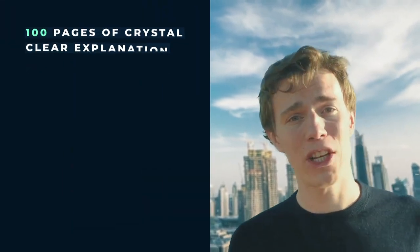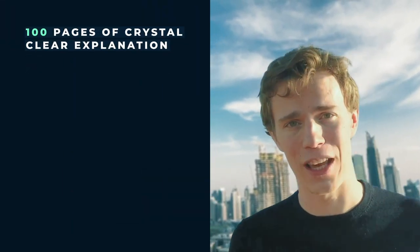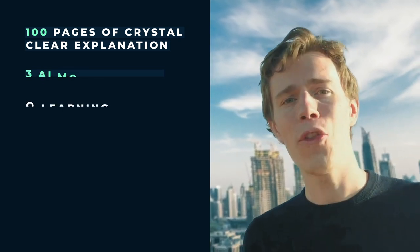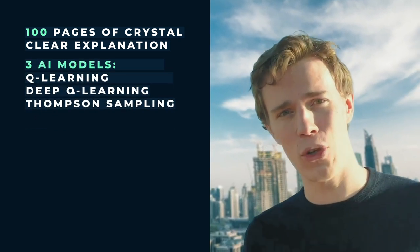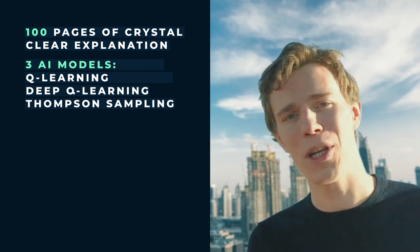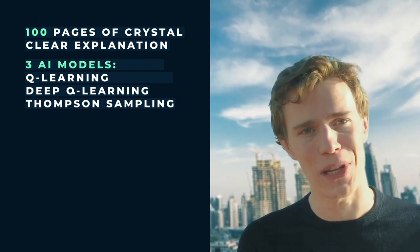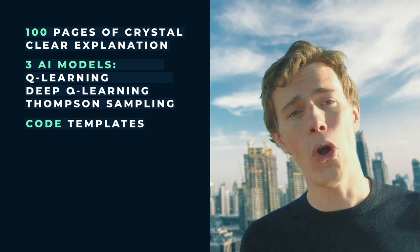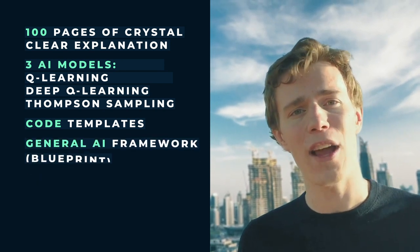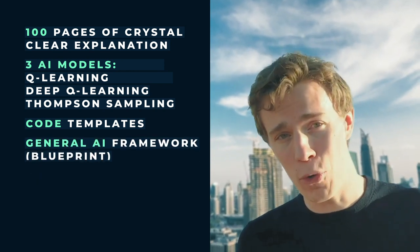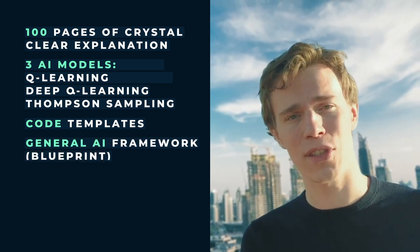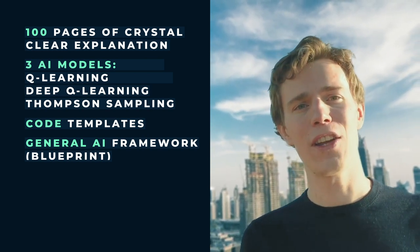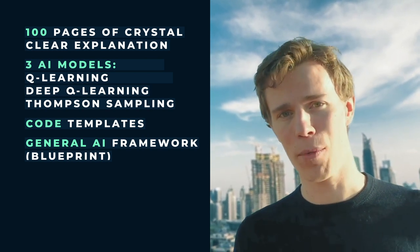This book includes 100 pages of crystal clear explanation written in beautiful and clean LaTeX. It covers all the AI models of the course, including Q-Learning, Deep Q-Learning, and the unbeatable Thompson Sampling, as well as all the code templates of the course. And even better, we will give you a general AI framework — a blueprint containing the general steps of the AI process you have to follow when building an AI to solve any business problem.